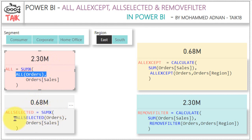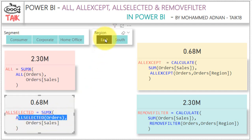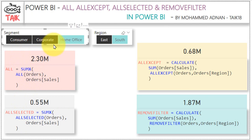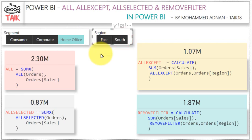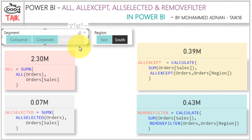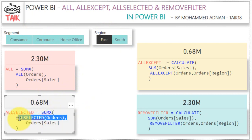In ALLSELECTED, whatever value has been selected for this table — I have selected Region East, so it filters based on Region East. If I also select a Segment, it will filter that value as well, because it takes only the selected values. In Segment it is taking Consumer and Corporate; in Region it is taking only East. If I change it to South and Home Office, removing those two, then it will show only the value for Region South and Segment Home Office. That is what ALLSELECTED does.